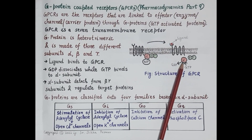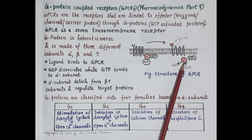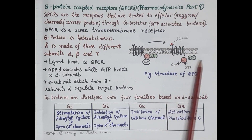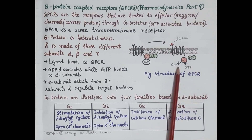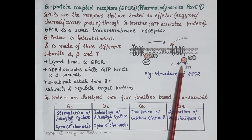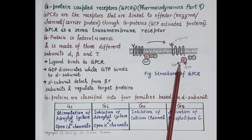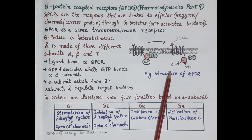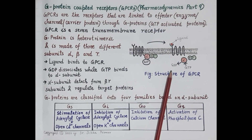Binding of GTP activates the G protein coupled receptor. Once activated, the alpha subunit detaches from the beta and gamma subunits and begins regulating target proteins, triggering production of secondary messengers within the cell. The ligand is the primary or first messenger, while second messengers such as inositol triphosphate, diacylglycerol, and cyclic AMP are produced within the cell.